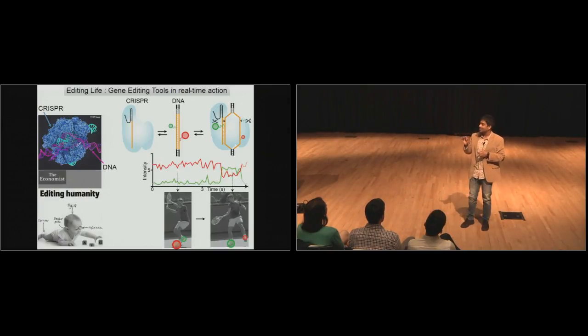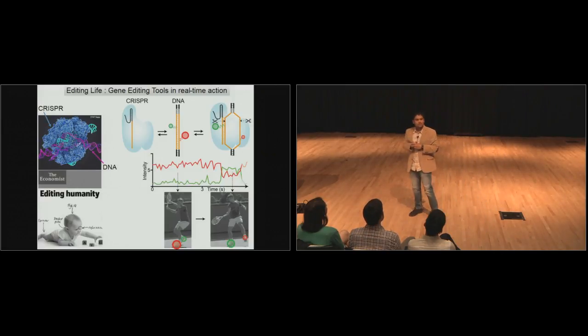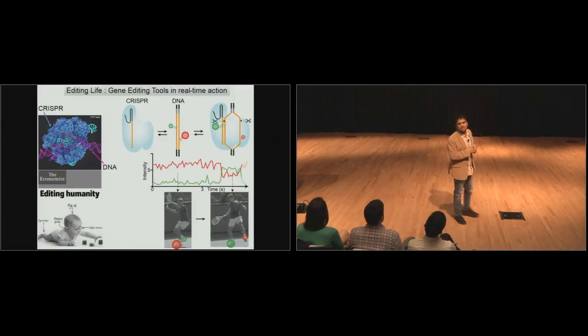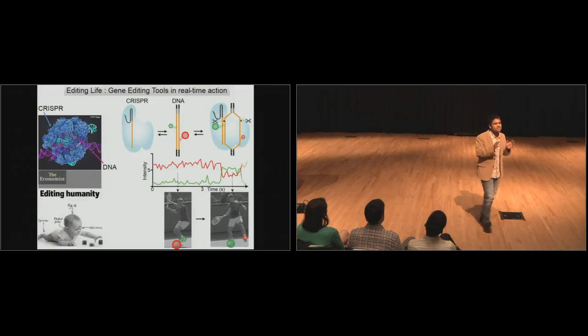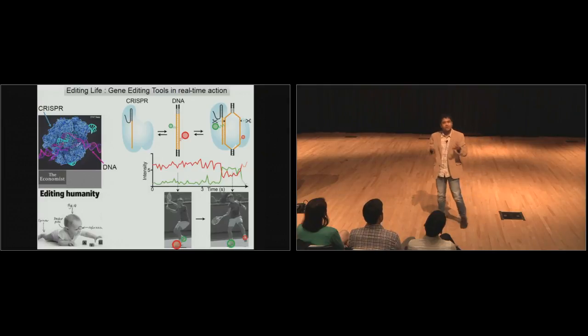But with great power comes great risks. This protein is not always very accurate about following instructions, and it can make mistakes by modifying unwanted genes resulting in dangerous side effects. One of the biggest challenges in solving this problem is the lack of full understanding of how this CRISPR protein works.